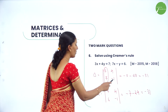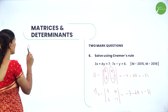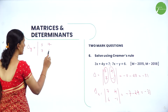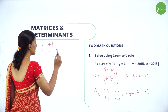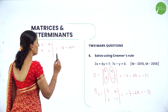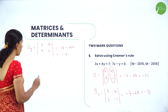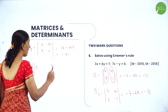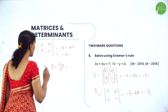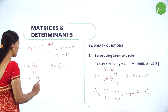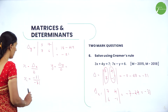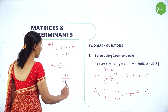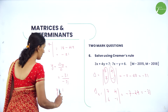For Δy, replace the y-coefficients with the constants: Δy = [3, 7; 7, 6] = 3×6 - 7×7 = 18 - 49 = -31. To find x, take Δx/Δ = -31/-31 = 1. To find y, take Δy/Δ = -31/-31 = 1. Therefore x = 1 and y = 1.